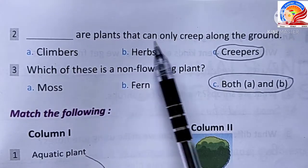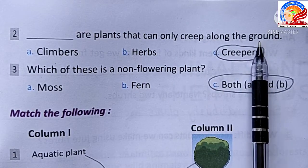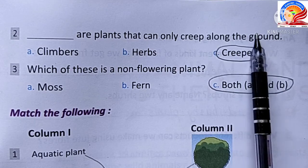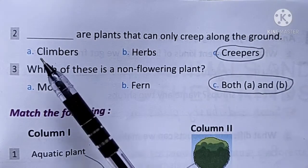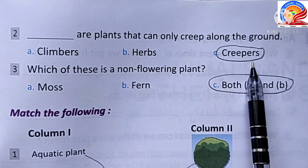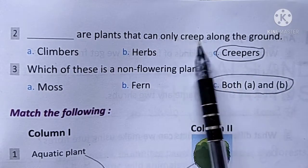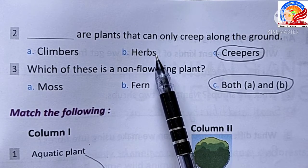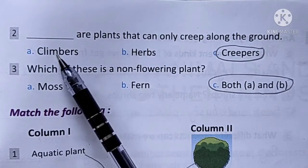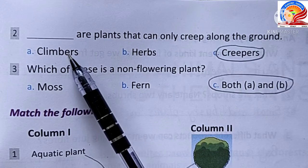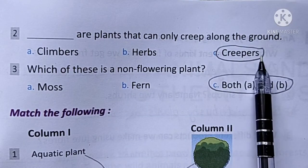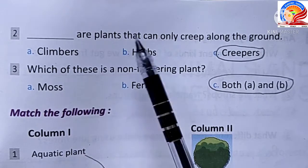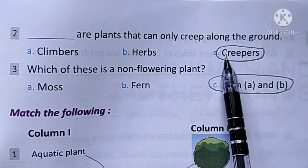Which are plants that can only creep along the ground? Options: climbers, herbs, creepers. The answer is creepers. Herbs are small plants with green stems that stand upright on their own. Climbers need support to stand. Creepers cannot stand upright even with support; they only crawl along the ground.